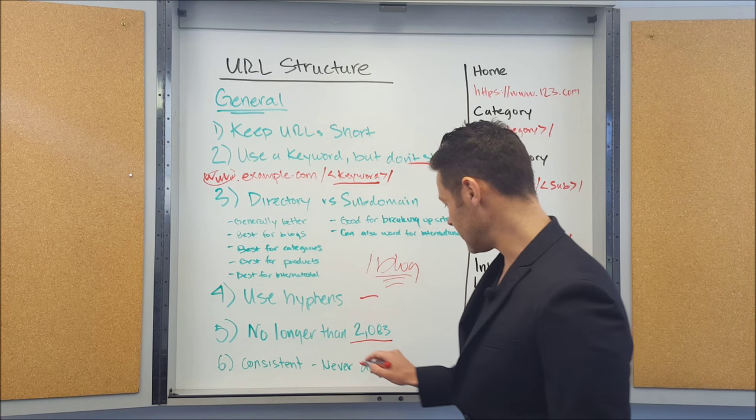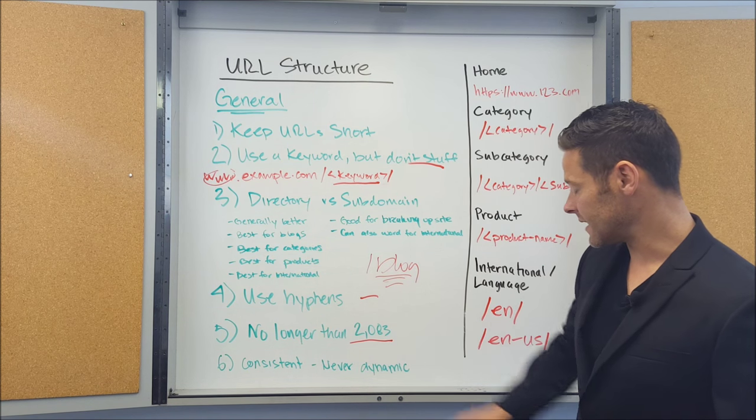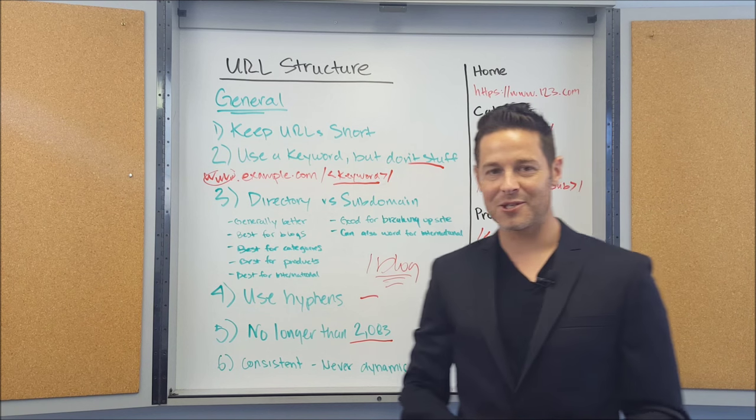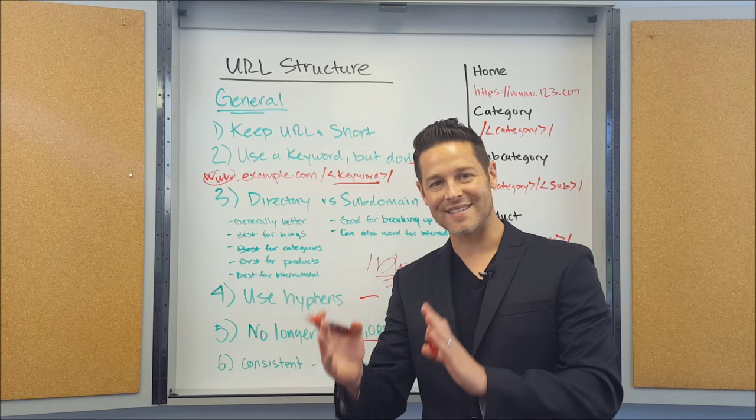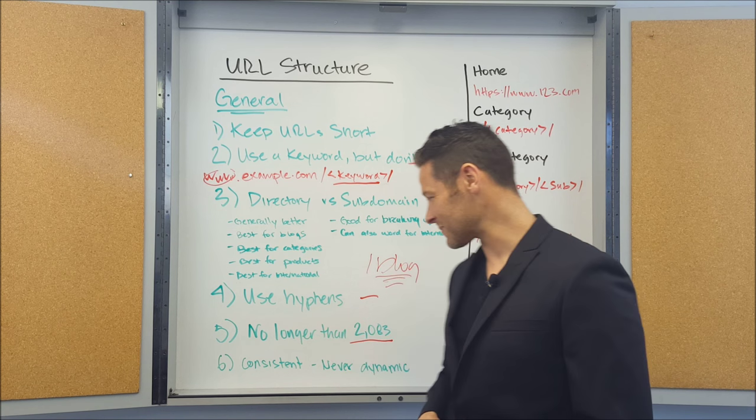You don't want your URL to be any longer than 2083 characters. And really it shouldn't ever be even close to that long. You want to keep it as short and concise as possible for a lot of different reasons.